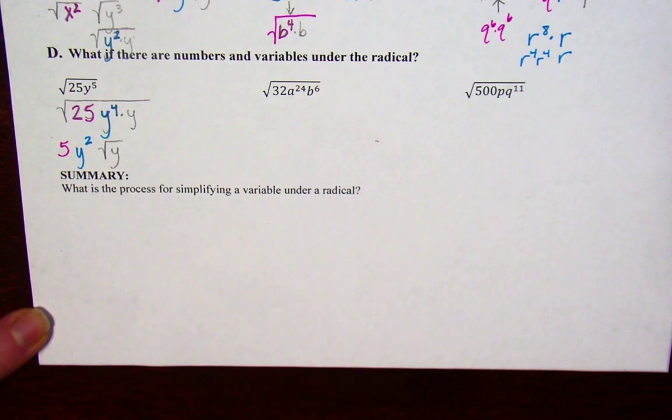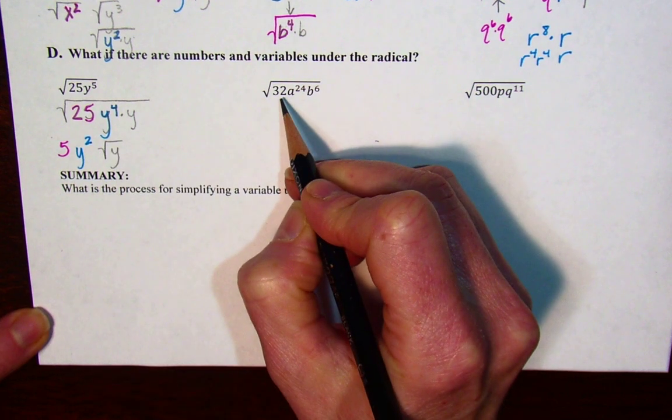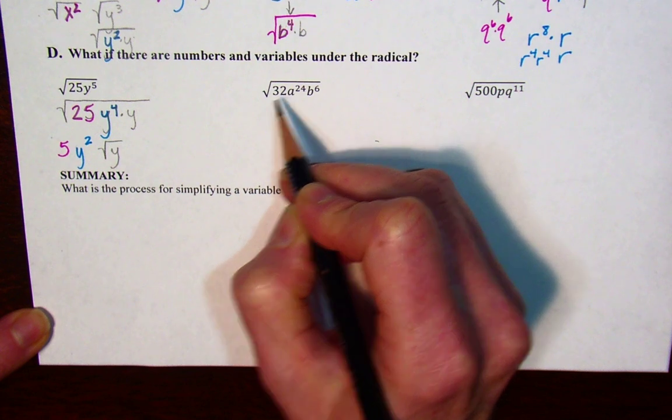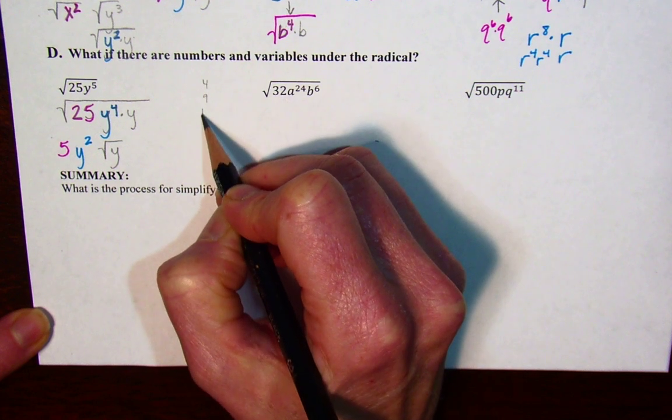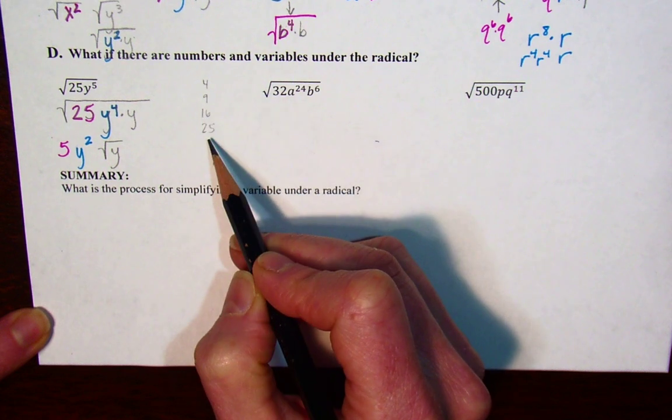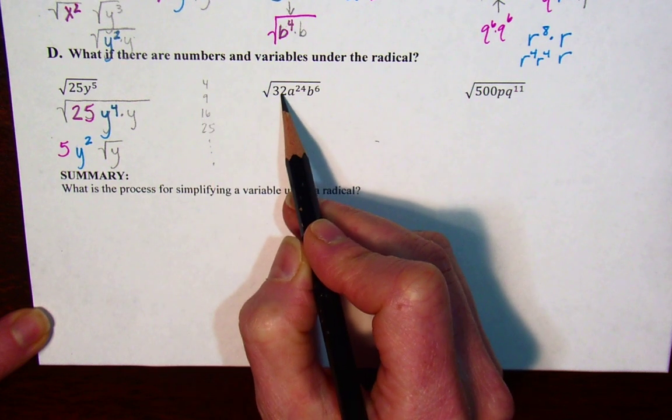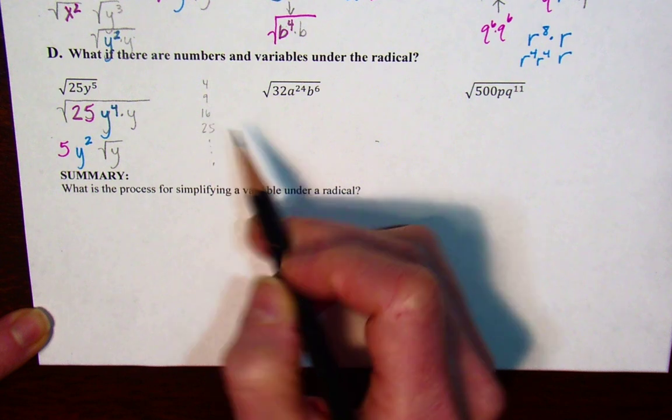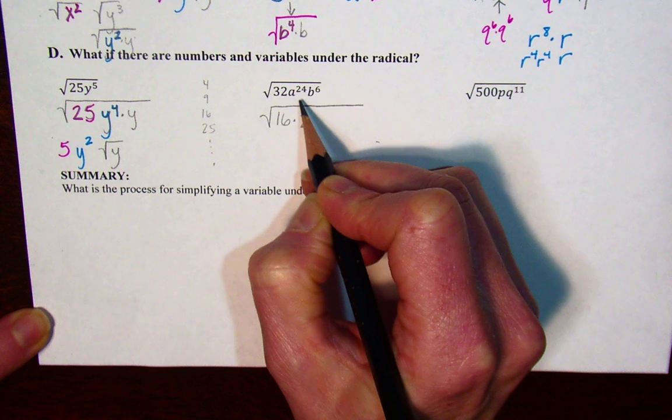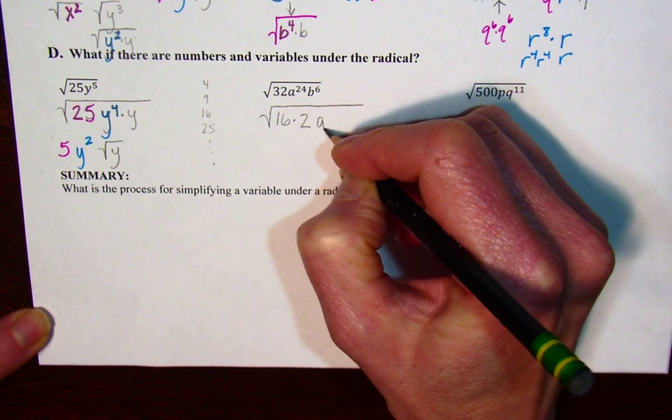For 32, I think about the biggest perfect square that goes into 32. Thinking about my list of perfect squares, which one of these numbers is a factor of 32? Well 4 is, but 16 is as well, so I'm going to rewrite this as 16 times 2.